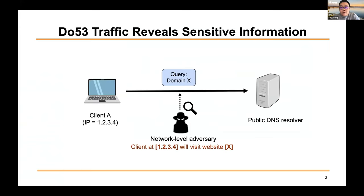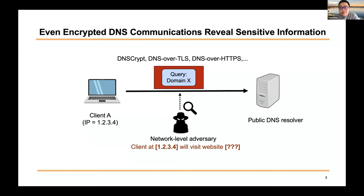As we all know, conventional DNS (DO53) is a plain-text protocol. A network-layer adversary can access all sensitive information, such as client IP and the query domain in DO53 traffic. Such information can be used for inferring user browsing behaviors, fingerprinting, and tracing users.